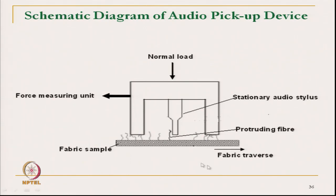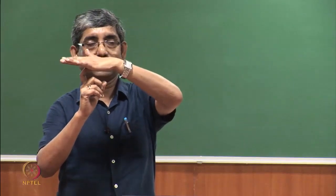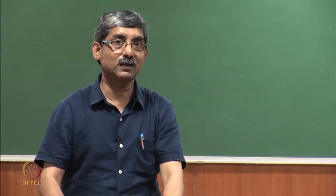When we start moving the fabric, the normal load gives the idea about the buckling force. The erected/projected hairs, when load is applied, give the buckling force. As the fabric moves, the force is measured by a force measuring unit. The projected hairs give a signal via the audio stylus due to bending force, and ultimately we get measurement of the bending force of the hairs.